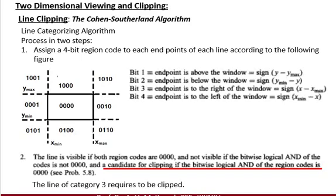If a line goes from inside to outside, or outside to inside, we take two endpoint codes — for example 0001 and 0000 — and perform an AND operation between them. If the result is 0000, we clip the inner section and discard the outer section.